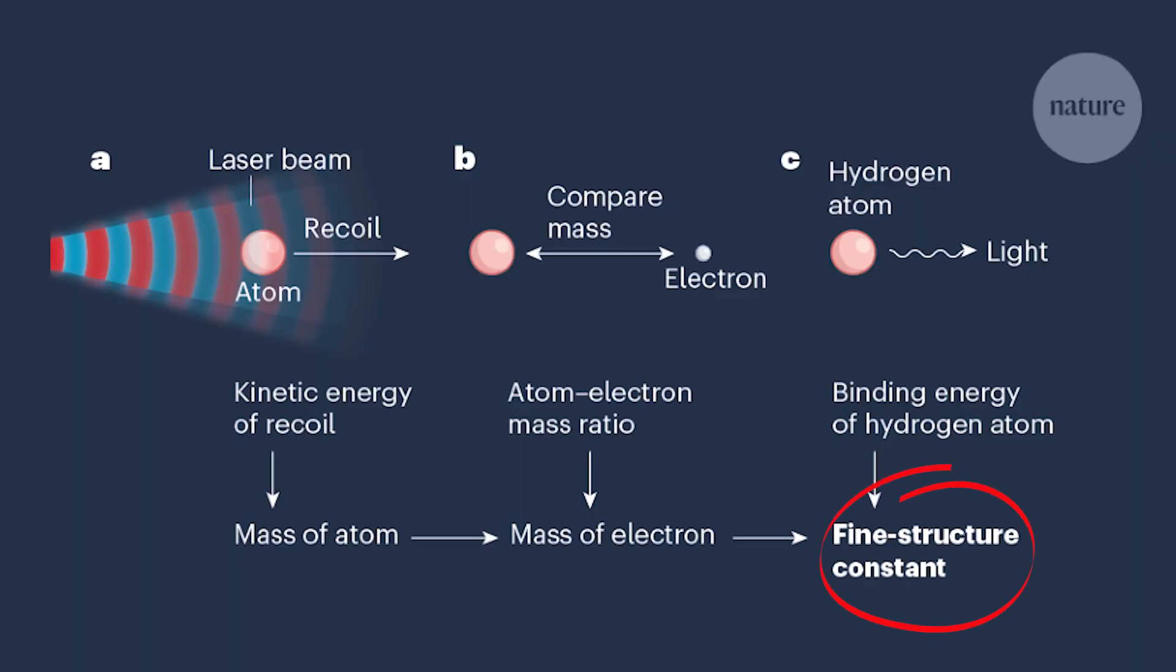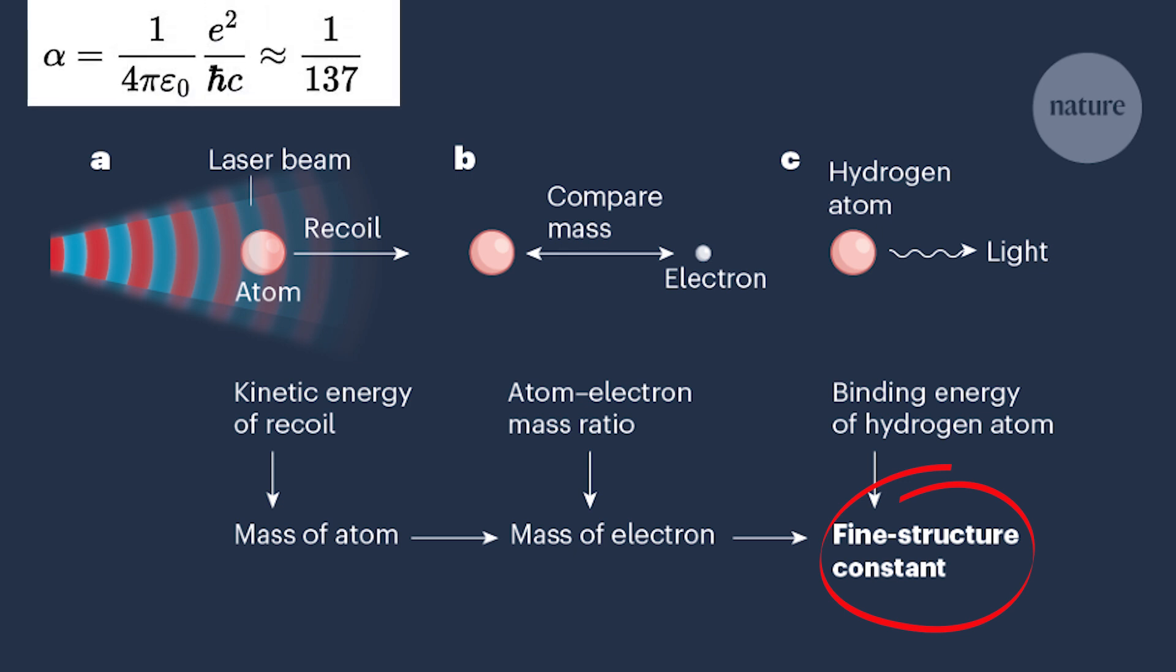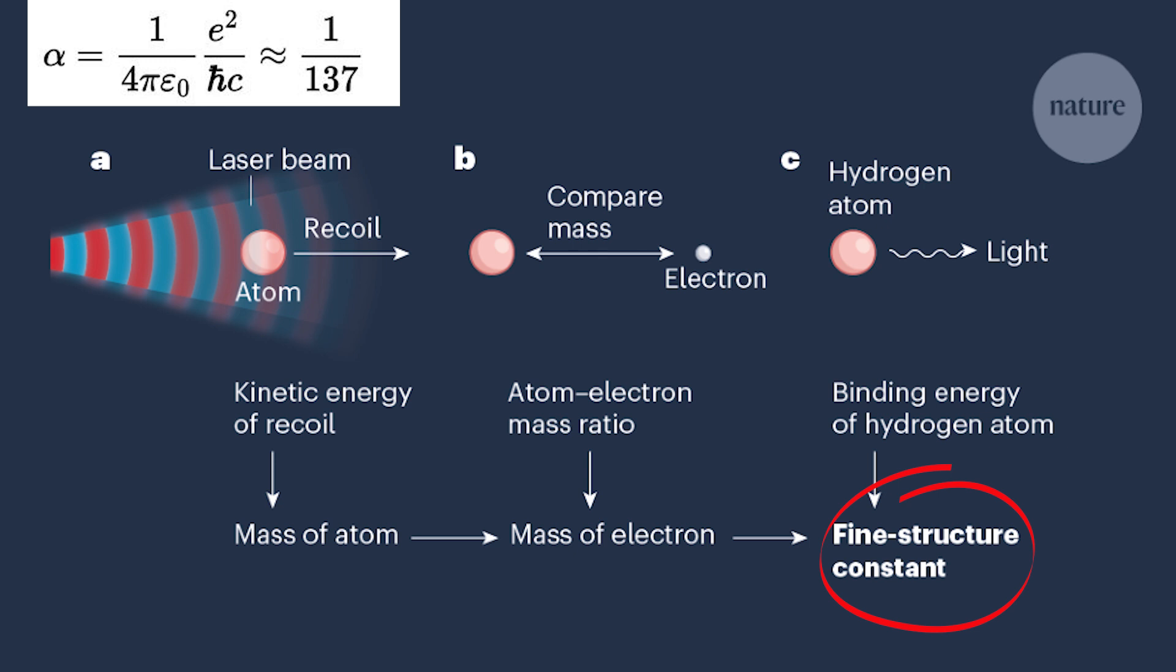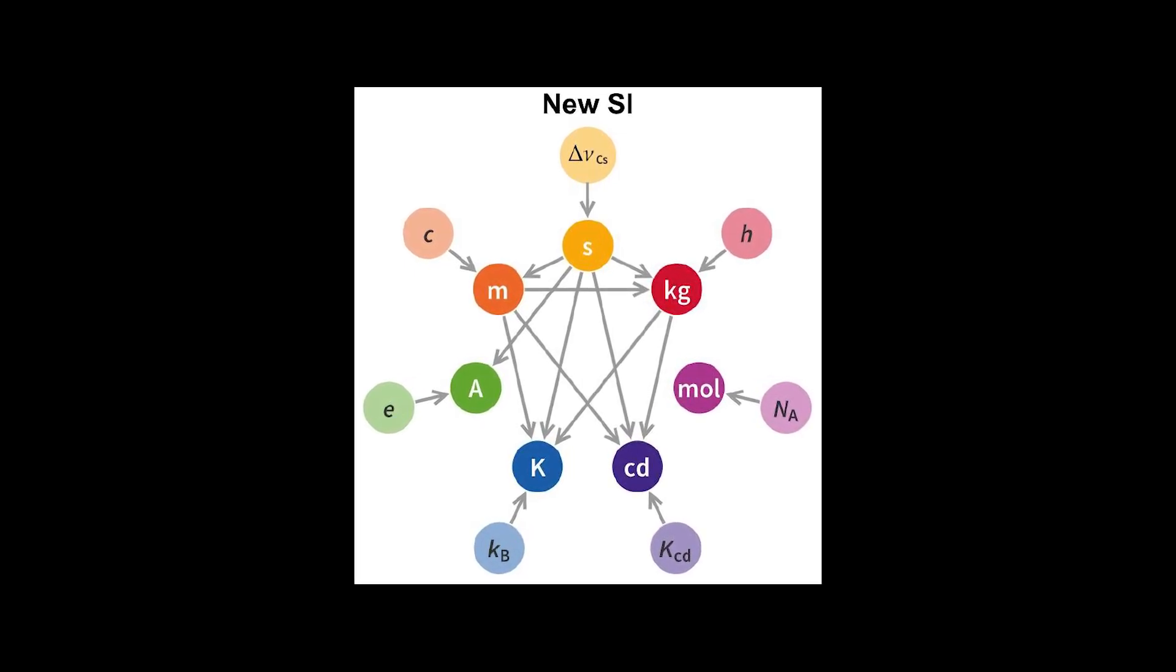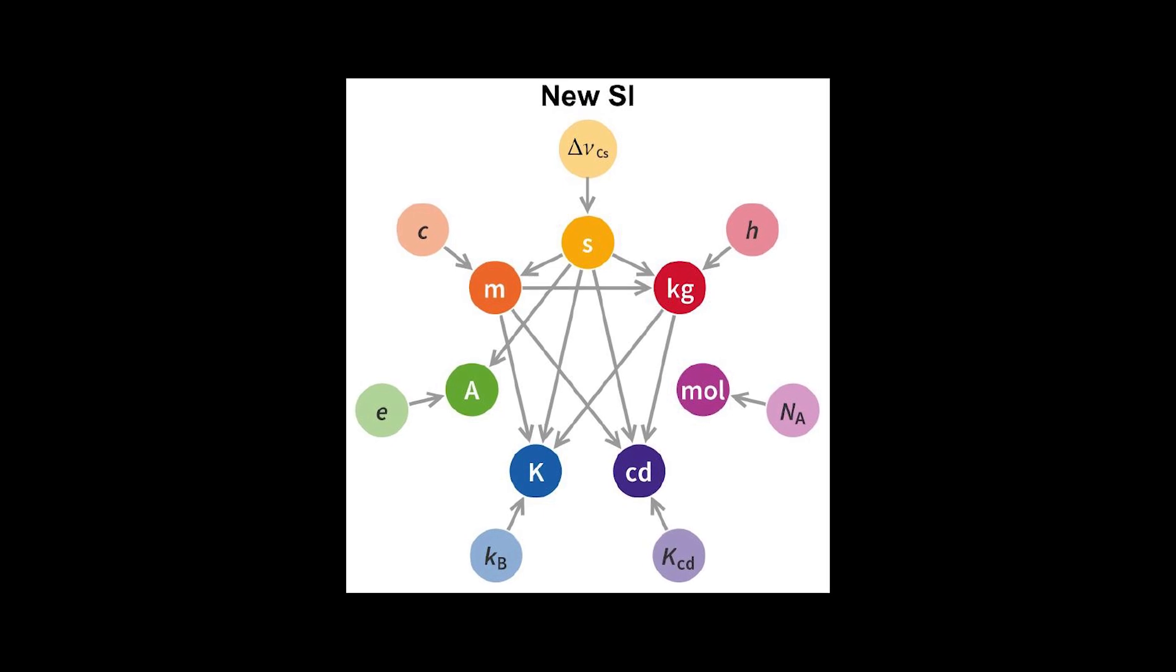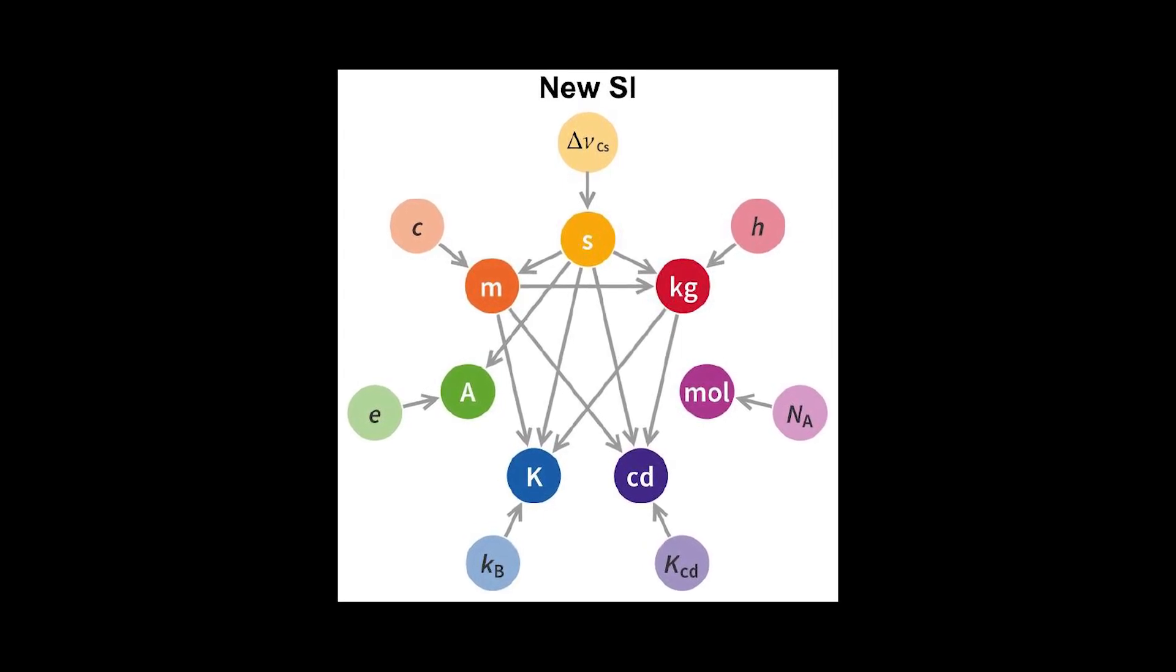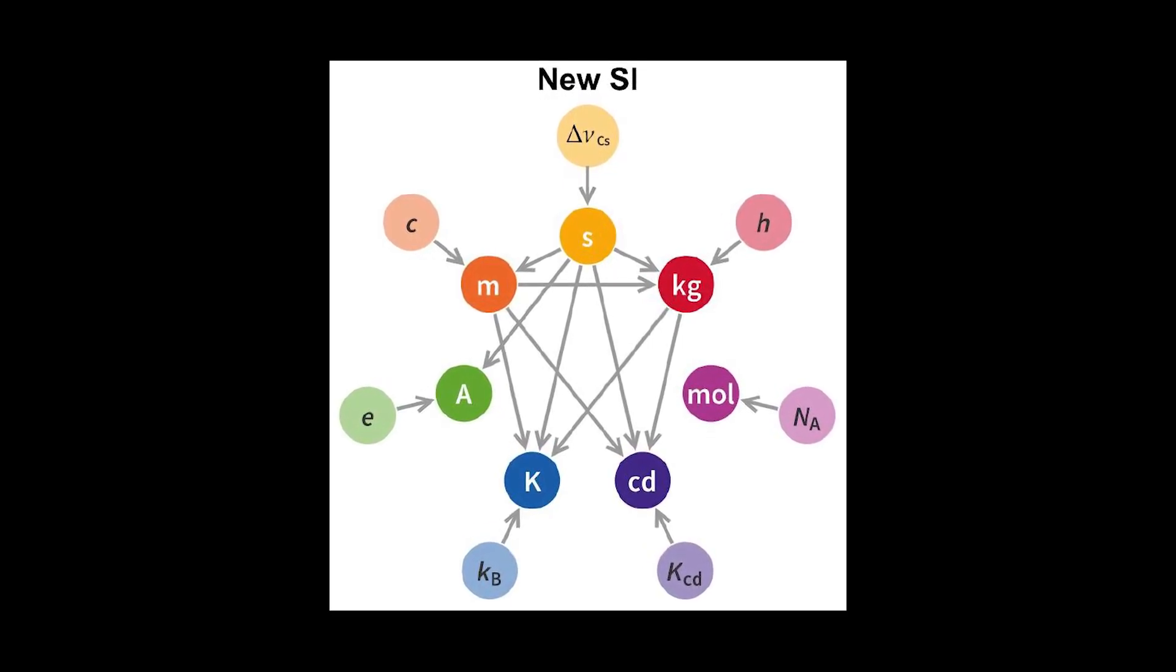The researchers identified an invariance in unitless parameters. The fine structure constant with a value of roughly 1 to 137 is the most well-known of them. Basically, you can combine measurable data in such a manner that all the units cancel out, giving you the same number regardless of unit, which is wonderful if you're a theorist.